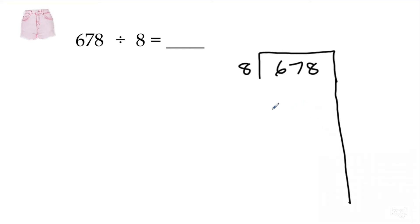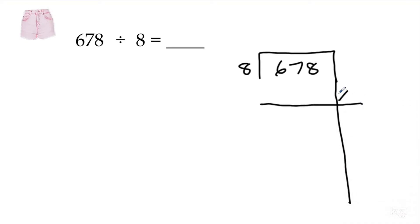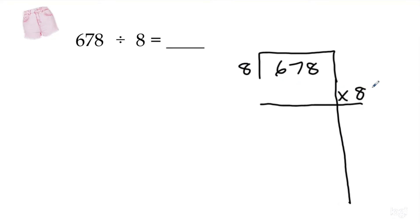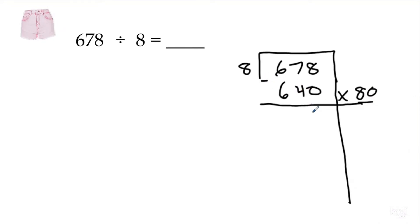When I'm doing partial quotients, I'm trying to think how many groups of 8 can I make? You can build your answer any way you want as long as you're doing groups of 8, but we want to take the biggest chunk out possible. I know 8 times 8 is 64, which means 8 times 80 should be 640. So I'm going to subtract 80 groups out, and then I have 38 left.